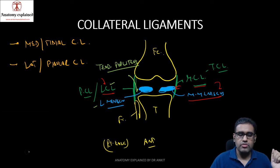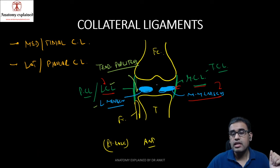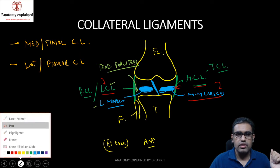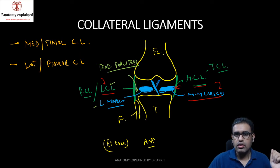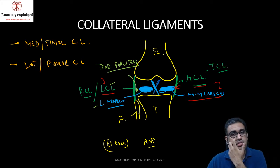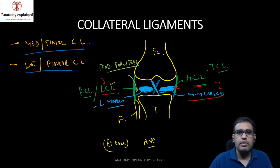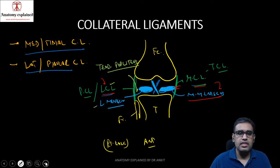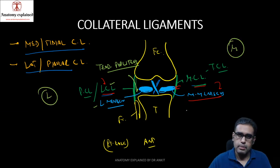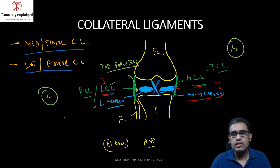The cruciate ligaments are present like a cross in the center of the joint — they cross each other, hence the name cruciate. In the coronal section figure, you can see the tibial collateral ligament is fused with the medial meniscus, while the fibular collateral ligament is separate from the lateral meniscus due to the popliteus tendon. The menisci divide the knee joint into two compartments: the meniscofemoral compartment and the meniscotibial compartment.